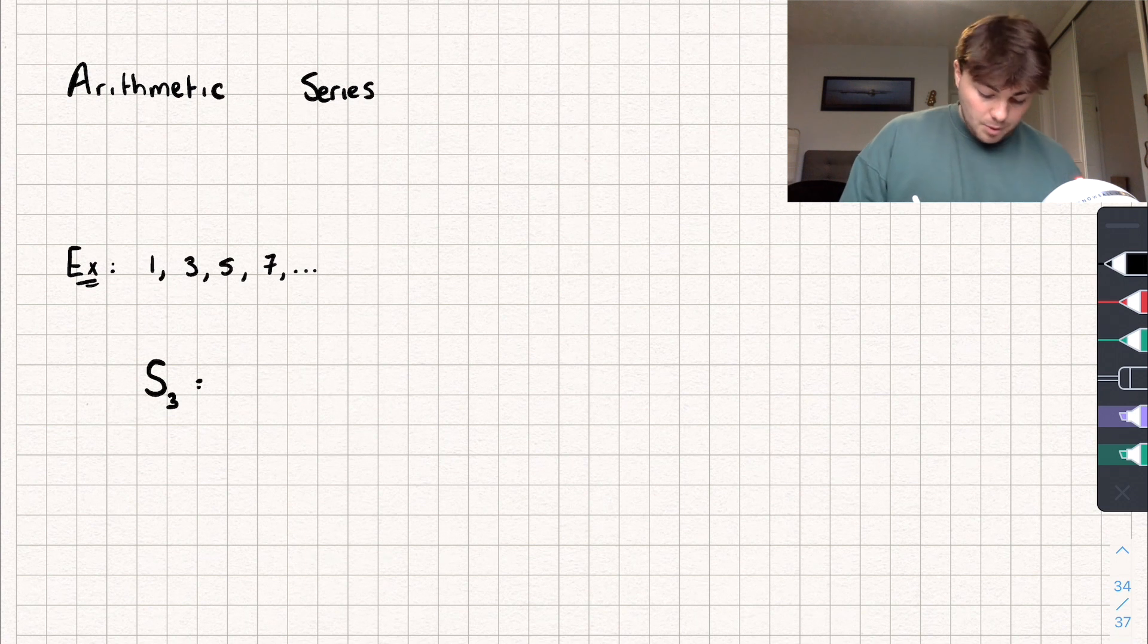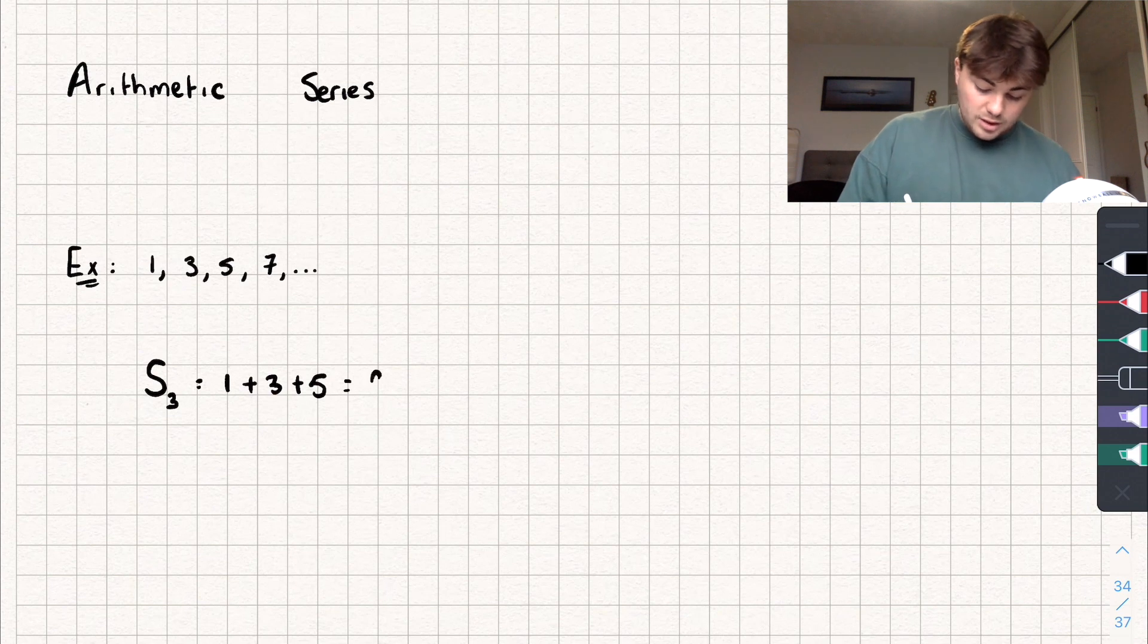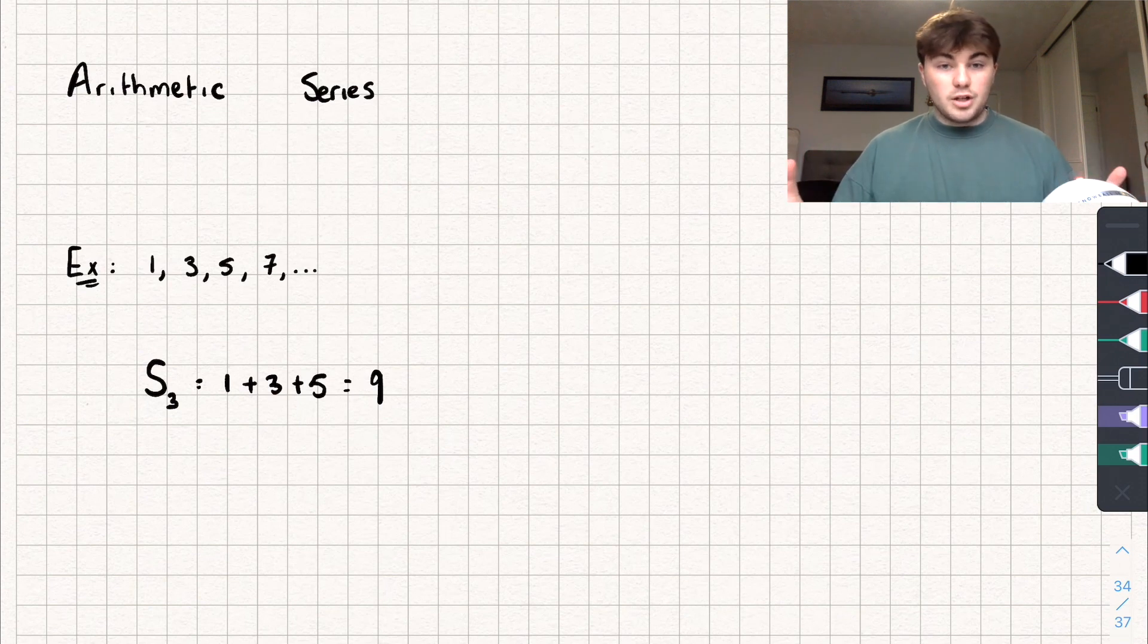So in this example, it would be one plus three plus five. And so if we work that out, we would get it's equal to nine. But we can extend this to a generic arithmetic progression.